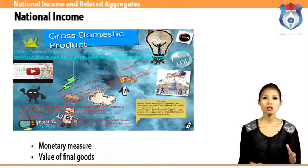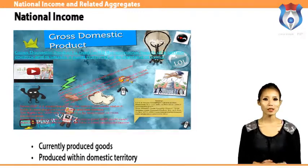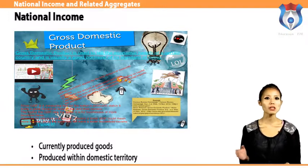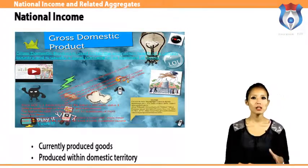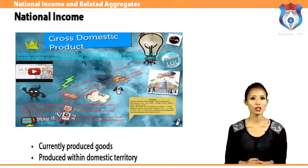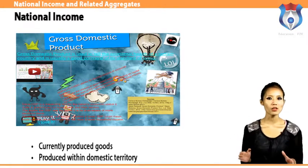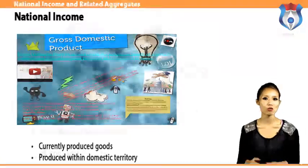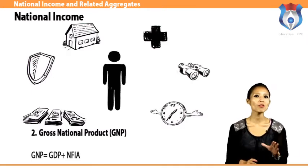GDP includes only currently produced goods and services in a year. Market transactions involving goods produced in previous periods — such as old houses, old cars, or factories built earlier — are not included in GDP of the current year. GDP refers to the value of goods and services produced within the domestic territory of a country, whether by nationals or non-nationals.